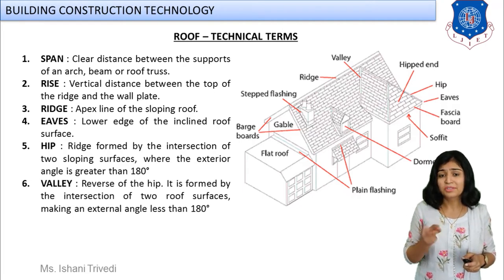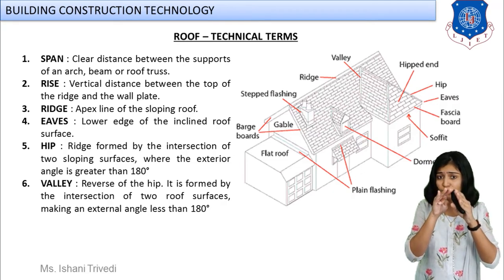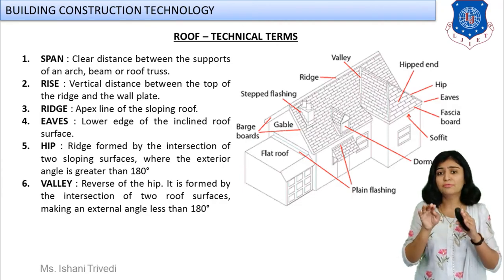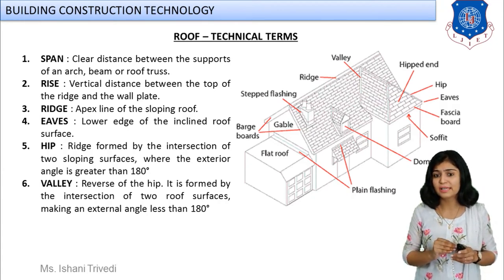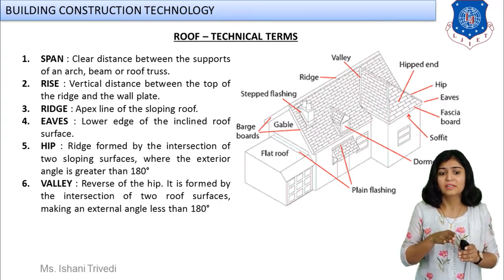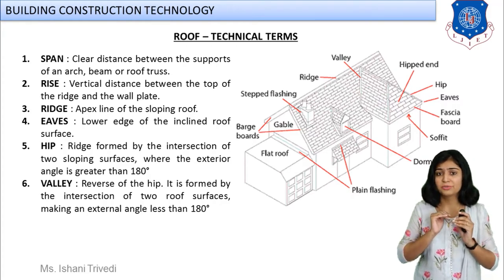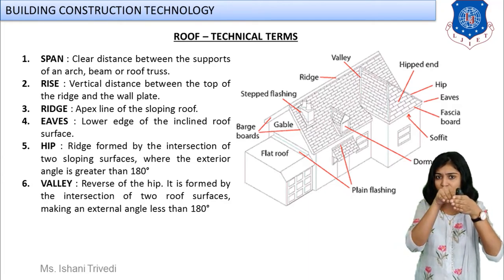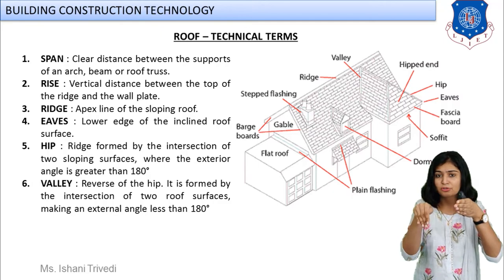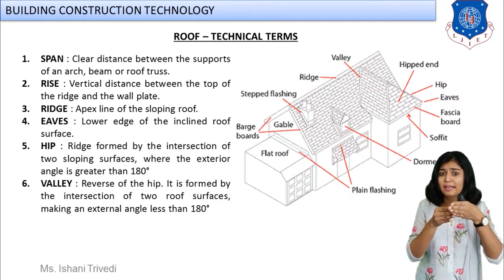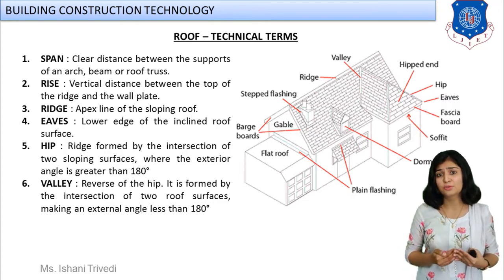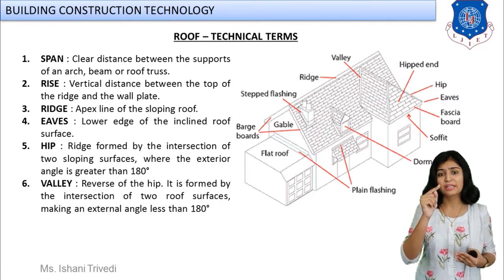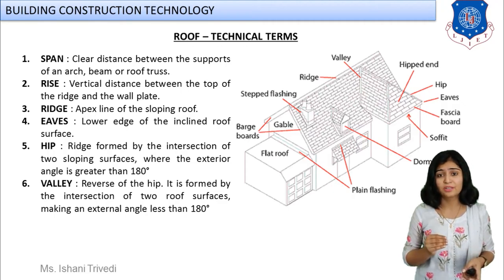Next is valley — the reverse of the hip. The intersection of two different pitch roof surfaces forms a valley. Spot the valley in the image — it is shown just near the ridge. One roof goes in one direction and another goes in a different direction; their intersection, where the angle is less than 180 degrees, is known as valley. You can match these words to a mountain: ridge, hip, and valley.